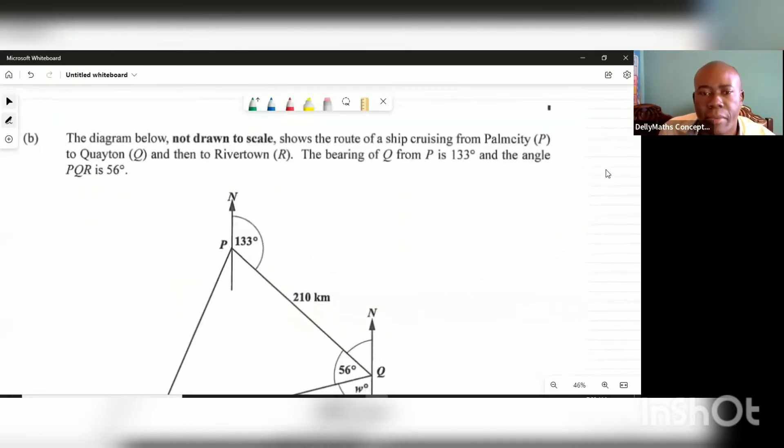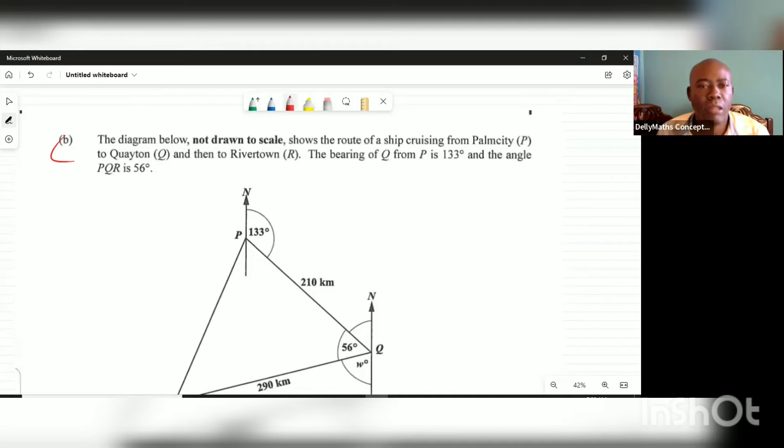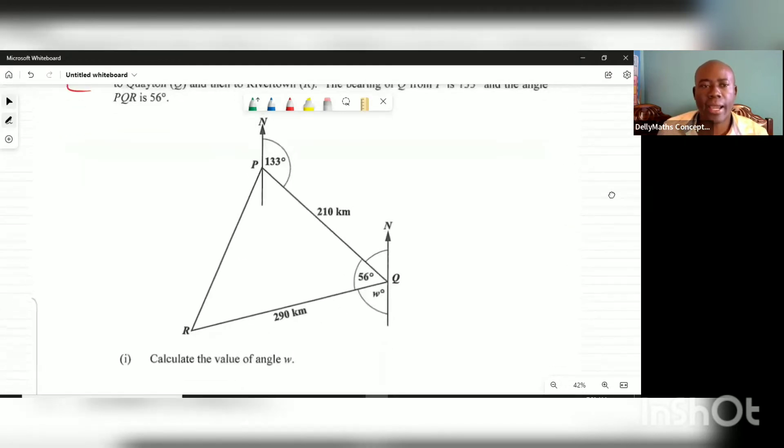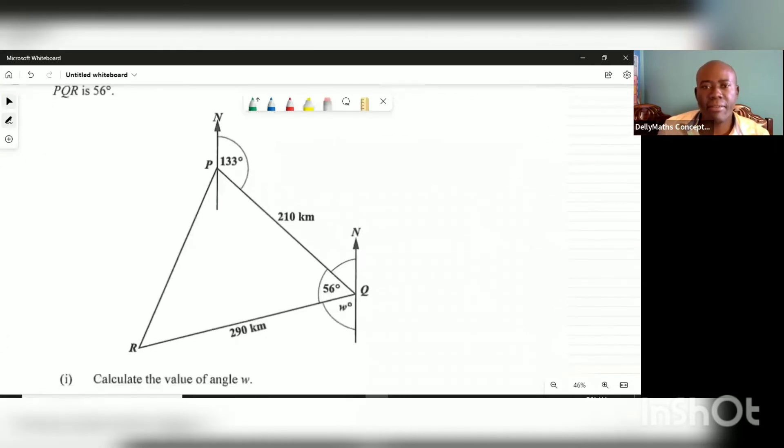The next question now is a bearings question. It says the diagram below, not drawn to scale, shows the route of a ship cruising from Palm City P to Quaytown Q, and then to Rivertown R. The bearing of Q from P is 133 degrees, and the angle PQR is 56 degrees. We have a nice labeled diagram and everything is on it.